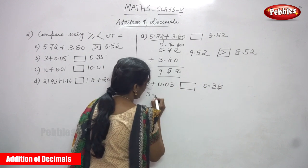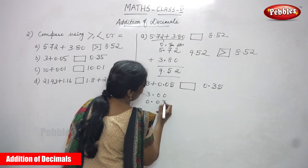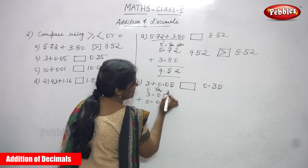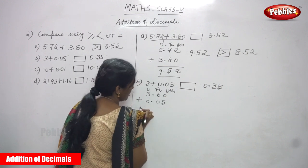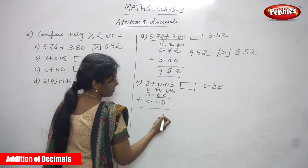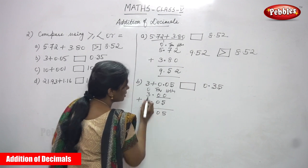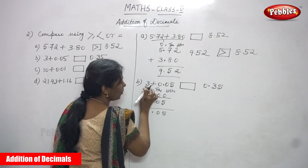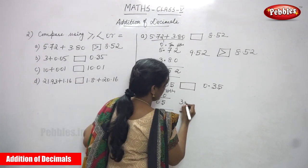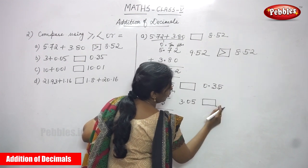Question B: 3 plus 0.05, with a box, then 0.35. Write it as 3.00 plus 0.05. The ones place is the whole part, tth is tens place, hts is hundreds place — these two after the decimal are the decimal part. Add: 0 plus 5 is 5, 0 plus 0 is 0, then put the point. Before the point, the whole part: 3 plus 0 is 3. The answer is 3.05.